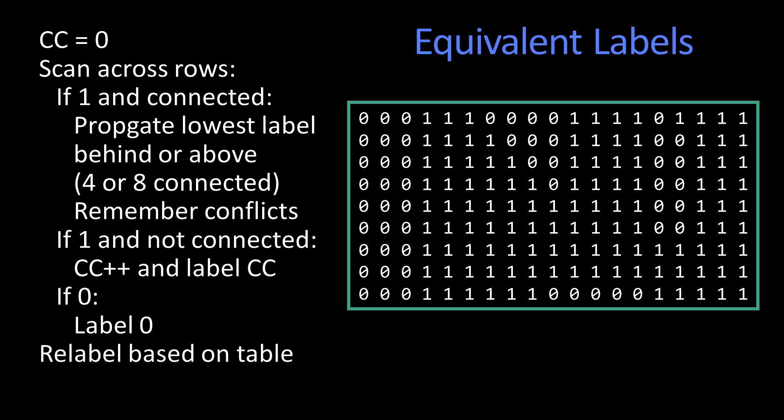So here is the algorithm. We start with a variable at zero. And what happens is we go across. When we find a new pixel, if it's not connected to anything before it or above it, and of course there's no above and there's no before, we'll increment our counter. So we start labeling this one as a one.